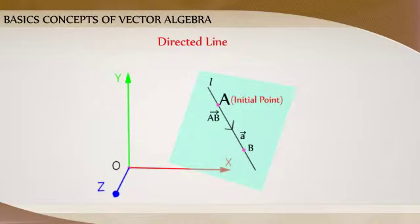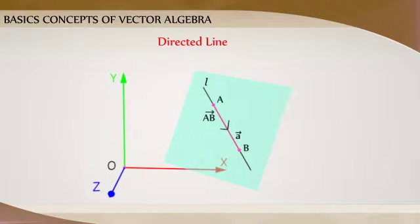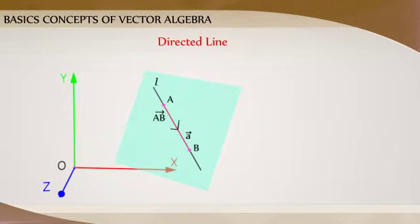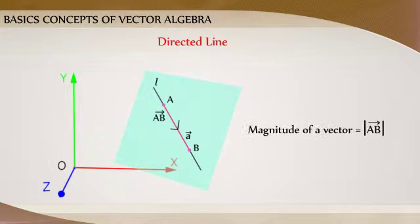The point A from where the vector AB starts is called its initial point, and the point B where it ends is called its terminal point. The distance between initial and terminal points of a vector is called the magnitude or length of the vector, denoted by modulus of AB vector.